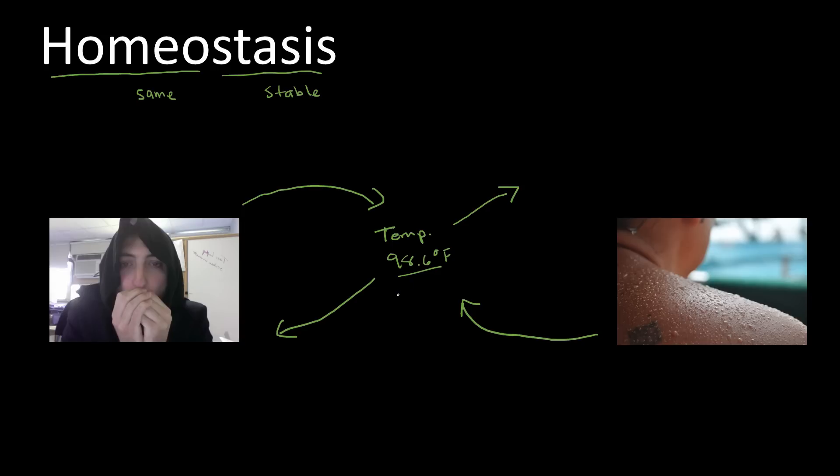This whole idea is called a feedback mechanism. A feedback mechanism is anything that pushes your body back into balance. Other ideas that go along with feedback mechanism or body conditions are things like blood sugar, blood pH, carbon dioxide levels, oxygen levels, and lots of other examples. So that's a feedback mechanism, pushing your body back into homeostasis or sameness.